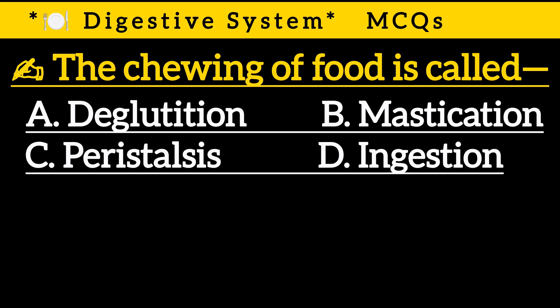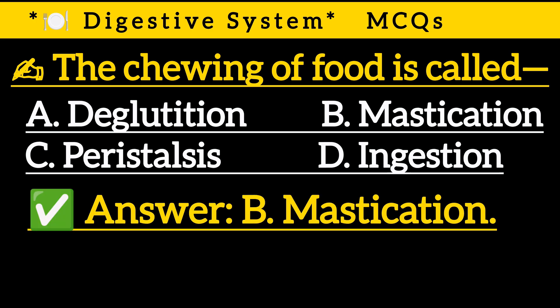Question 11: The chewing of food is called — Option A: Deglutition, Option B: Mastication, Option C: Peristalsis, Option D: Ingestion. Correct answer is Option B: Mastication.